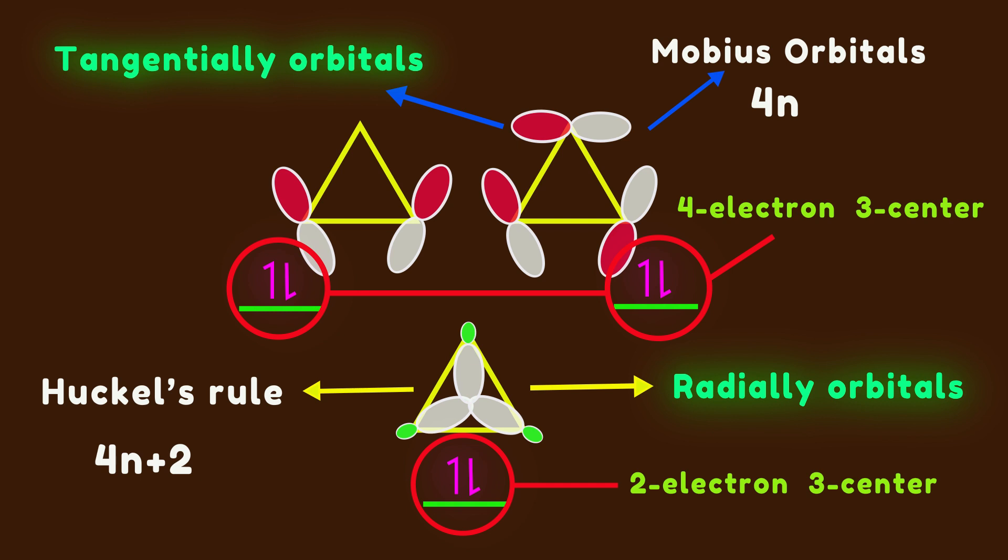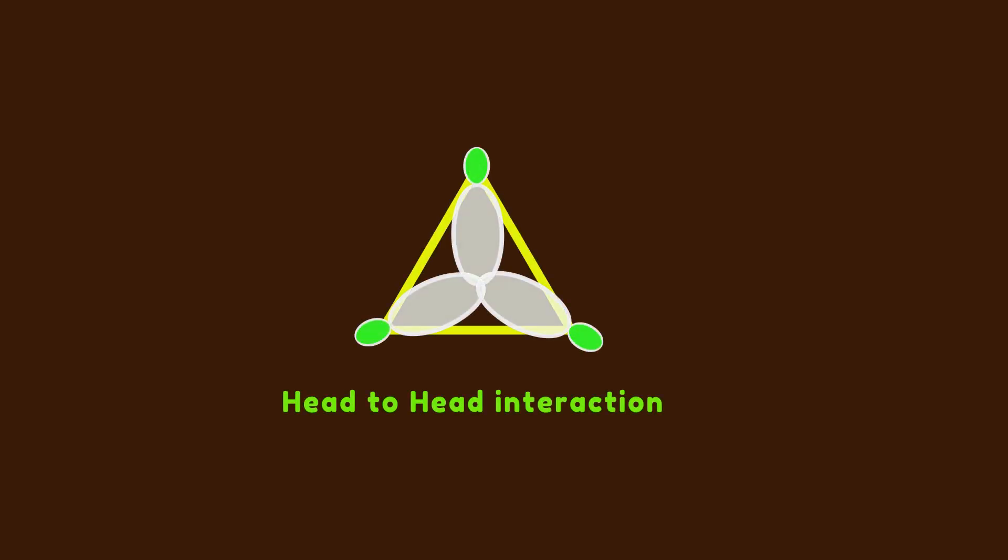In this way, Hückel or Möbius aromatic systems are formed. The radial orbitals without any nodes are aromatic. Tangential orbitals are also aromatic with one node. Depending on the size of the ring, the character of these orbitals is changed. In a three-membered ring, radial orbitals have a strong head-to-head interaction, so they make a molecular orbital with sigma character.